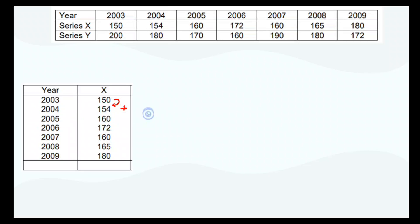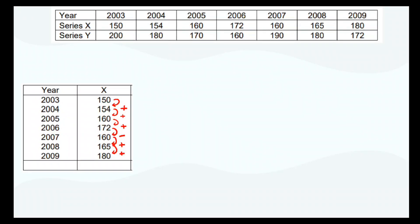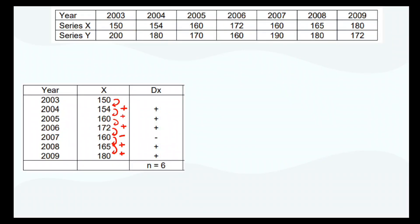Plus means increasing. For 2005, from 154 to 160, it is again increased — plus. For 2006, it is increasing — plus. Then it is decreasing — minus. Then increasing — plus. Again increasing — plus. So in dx I have a total of 5 plus signs and 1 minus sign, giving 6 comparisons total. This is dx, the deviation in x. For the first year we cannot write anything, so total there are 6 comparisons, and N equals 6.